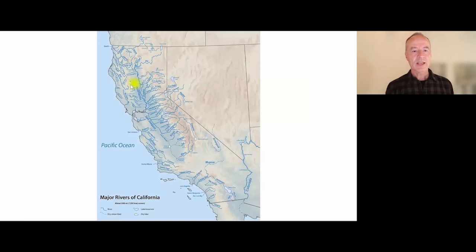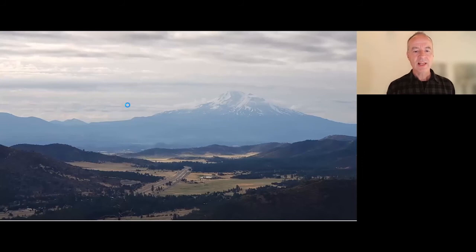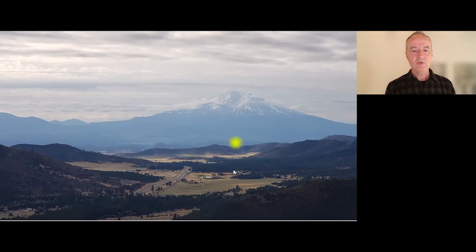Rivers coming out of the mountains fill the valley sediments with groundwater, and then much later that groundwater eventually oozes out along the bottom of these rivers just before they go out to the ocean. Here is a small valley in Northern California where you can see the alluvial sediments — the bathtub walls — and those alluvial sediments are filled with groundwater.